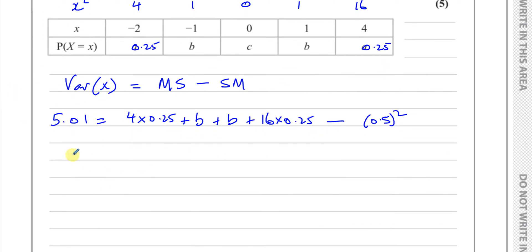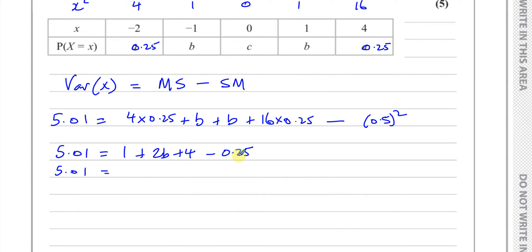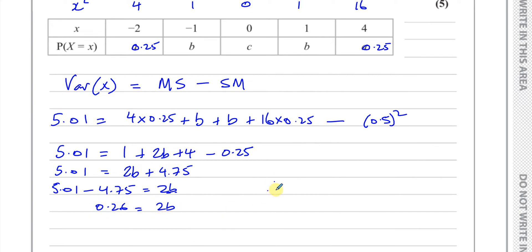The only unknown is B, so we can find it. 5.01 equals 1 plus 2B plus 4, minus 0.25, which simplifies to 2B plus 4.75. So 5.01 minus 4.75 equals 2B, giving 0.26 equals 2B, therefore B is equal to 0.13.